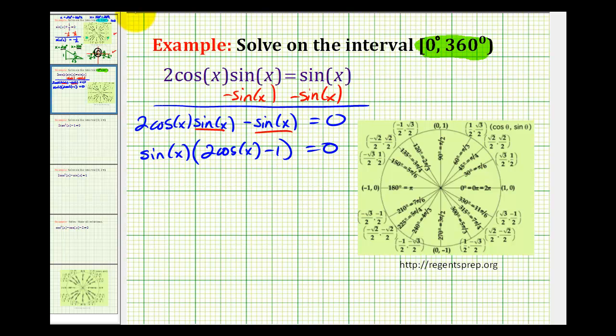So if this product is equal to zero, then either sine x has to be equal to zero or 2cos(x) - 1 has to equal zero.